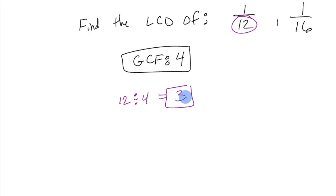Now we take that 3 and multiply it times the other number. That one in this case would be 16. 3 times 16 is 48 and that is the LCD.